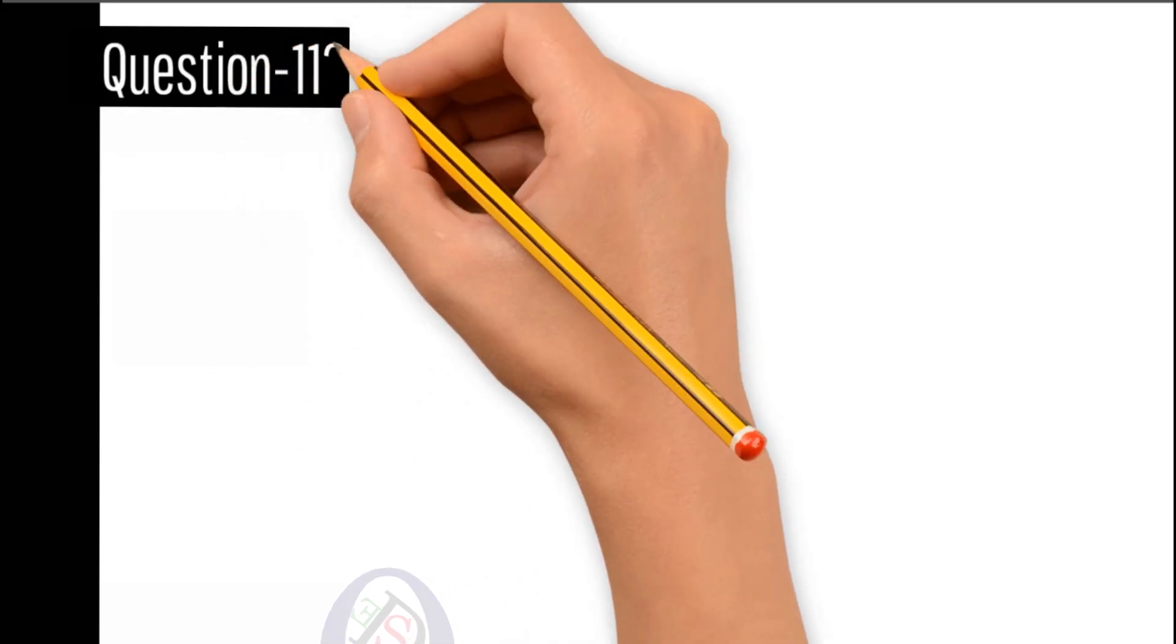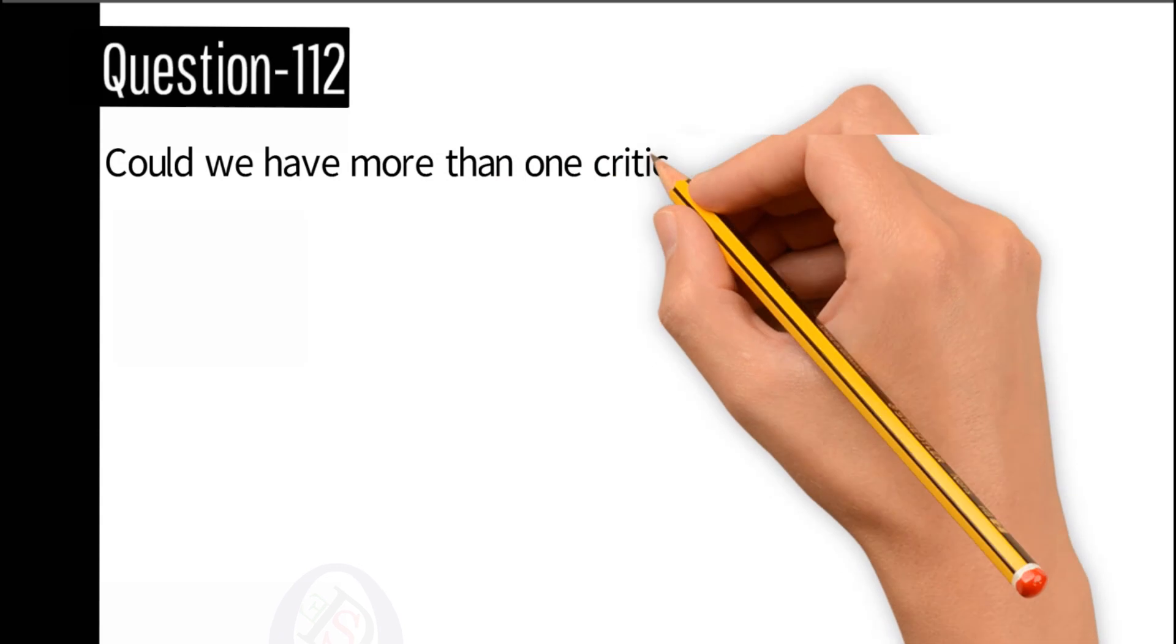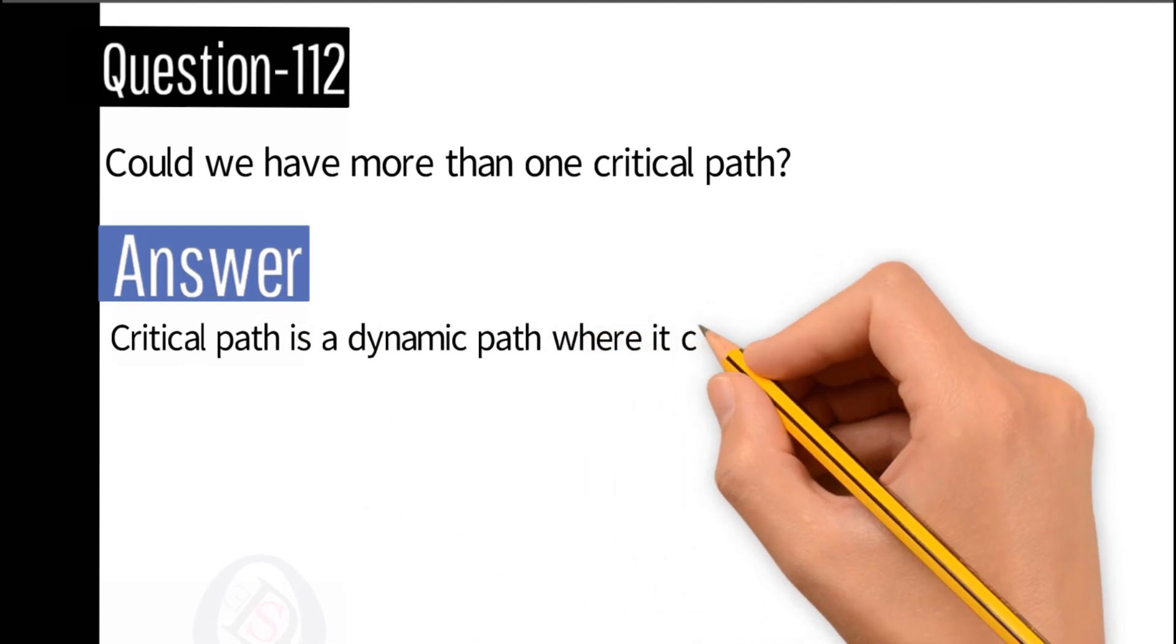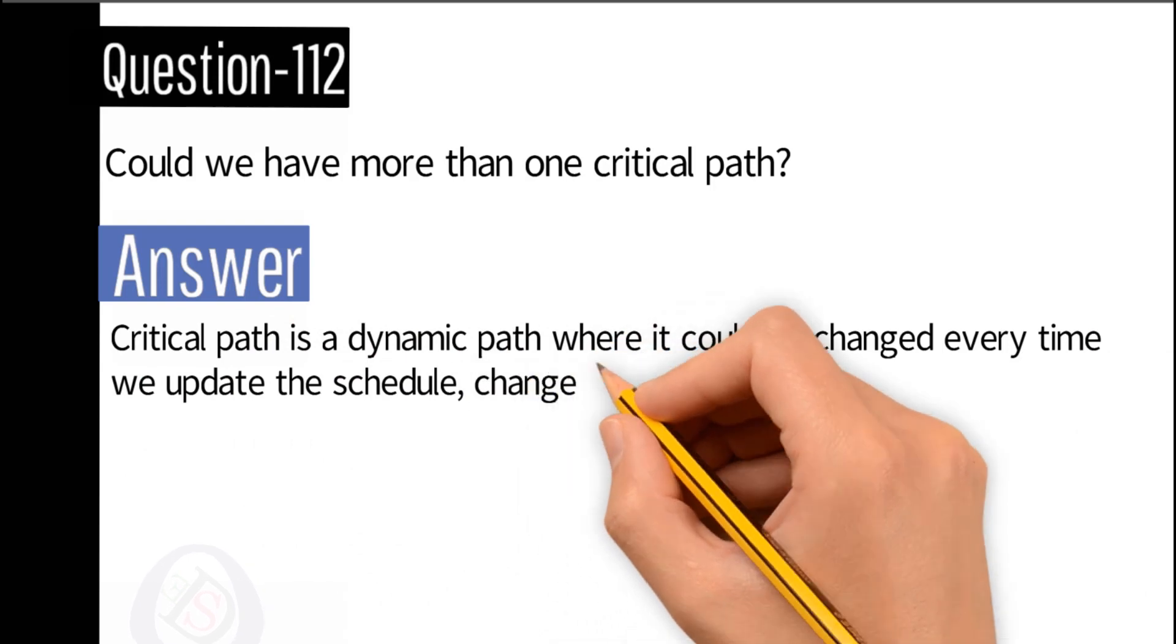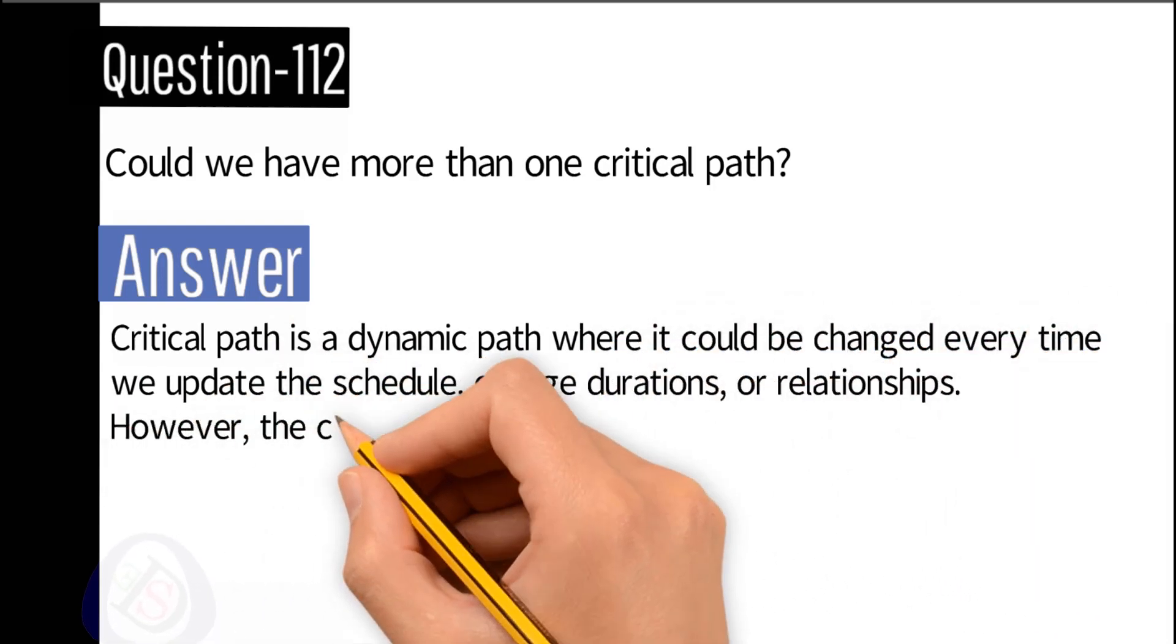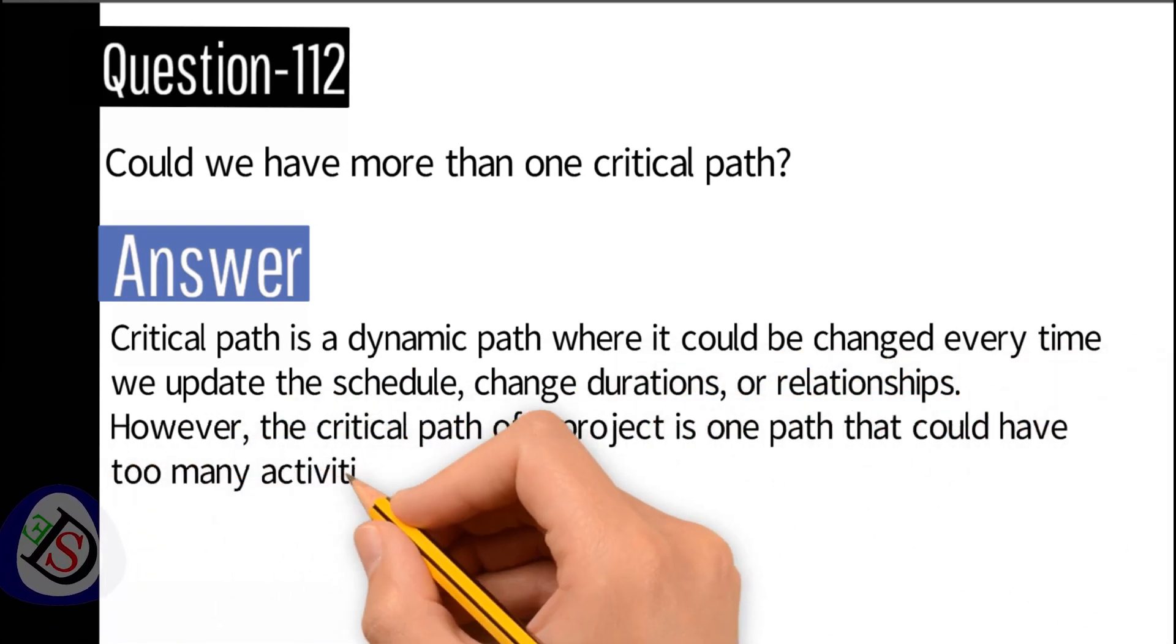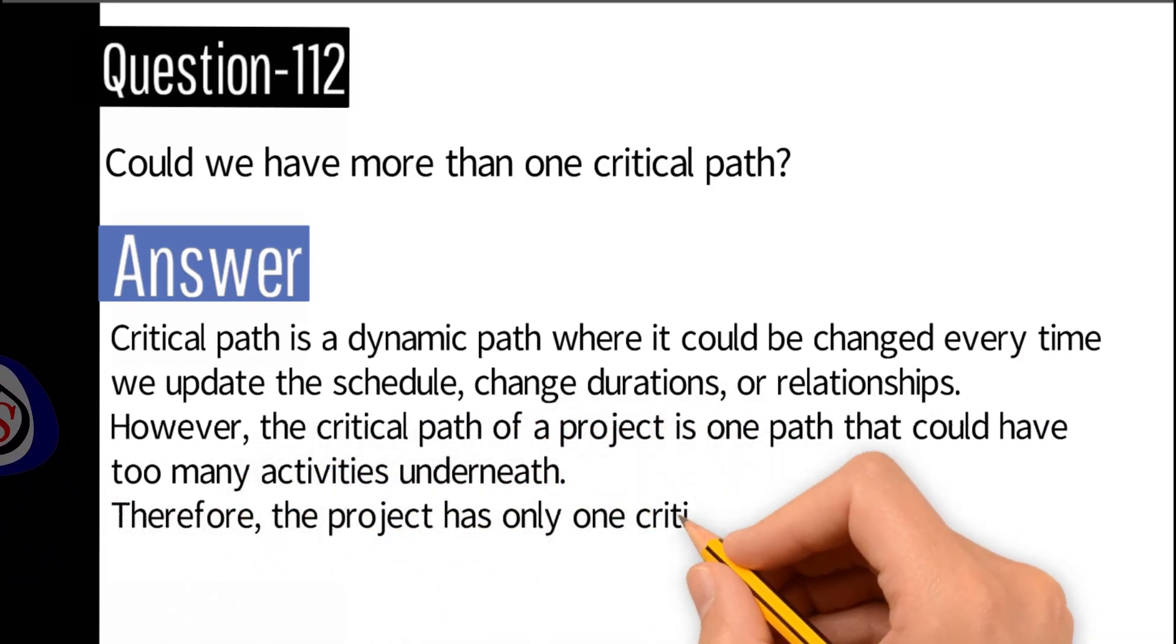Question number 112: Could we have more than one critical path? Answer: Critical path is a dynamic path. It could be changed every time we update the schedule, change durations, or relationships. However, the critical path of a project is one path that could have too many activities underneath. Therefore, the project has only one critical path.